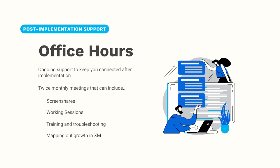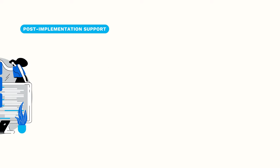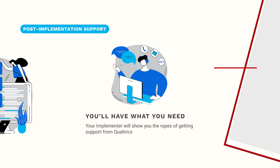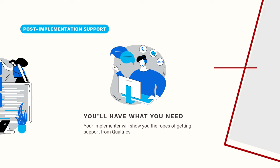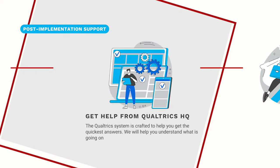Whether or not you purchase Office Hours or other ongoing support from Red Pepper, before your implementation ends, your implementer will cover how to contact the 24/7 Qualtrics customer support team. They will explain the benefits and limitations of the standard support that comes with your Qualtrics license. Standard Qualtrics support is a ticket-based system and we will provide you with basic training on creating and following a ticket.